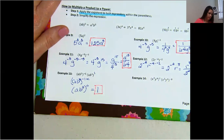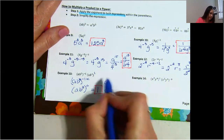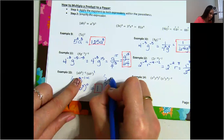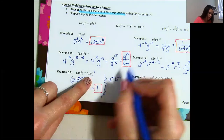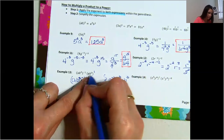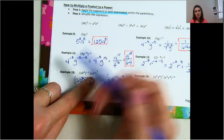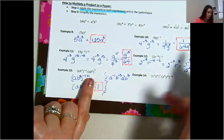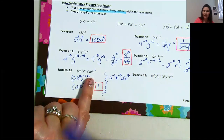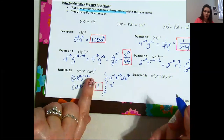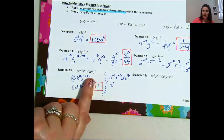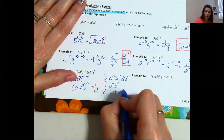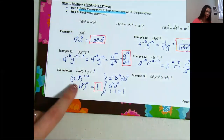There is another way to do this. You could apply the negative 1 to both terms: you have a to the negative 1, b to the negative 3, and then a to the 1, b to the 3. Notice how a to the negative 1 and a to the 1 cancel out — it becomes a to the power of zero — and b to the negative 3 and b to the third cancel out, becoming b to the power of zero. Both equal 1, and 1 times 1 equals 1.